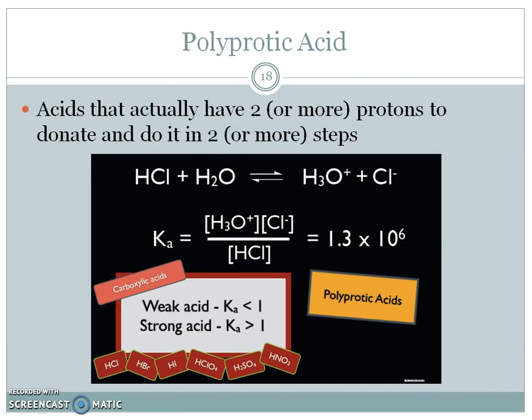Polyprotic just means that more than one is taken away. If we look here, H2SO4, that means there'll be two reactions. One reaction with one H taken away, leaving us with HSO4 negative, and then that guy will also dissociate to take away the second H, and we're left with SO4 negative two.